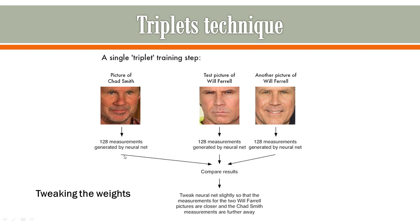We compare these three measurements and while comparing, we tweak the weights in our neural network so that the two images of Will Ferrell are closer together in distance, while the image of Chad Smith is further away. We keep tweaking our weights so that these two images are closer in distance and the image of Chad Smith is far away. That's how we apply the triplet technique.